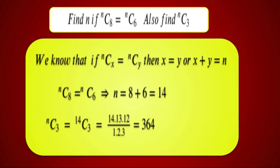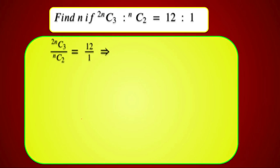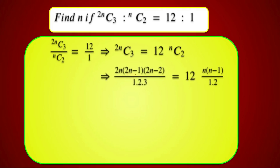Problem: Find n if 2nC3 : nC2 equals 12 : 1. This means 2nC3 divided by nC2 equals 12. Cross multiplying: 2nC3 equals 12 into nC2. Expanding 2nC3: 2n(2n−1)(2n−2) divided by 1×2×3, and nC2 is n(n−1) divided by 1×2.